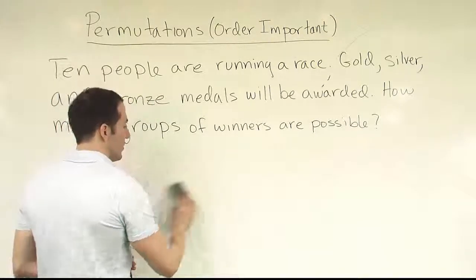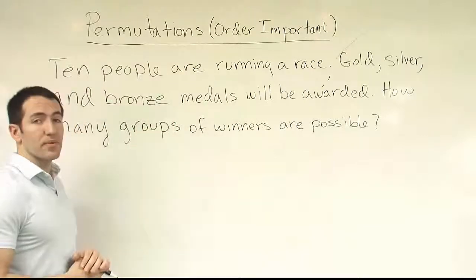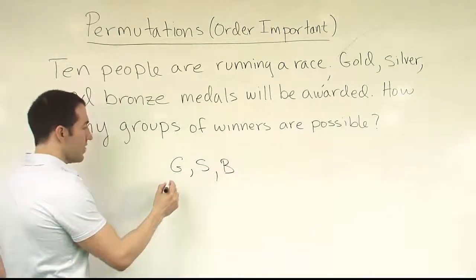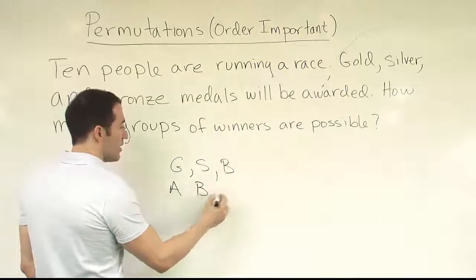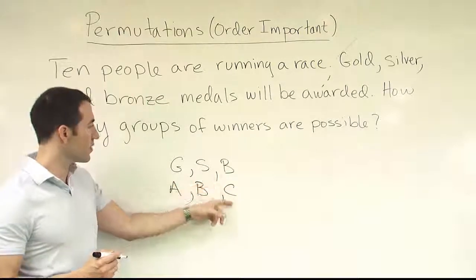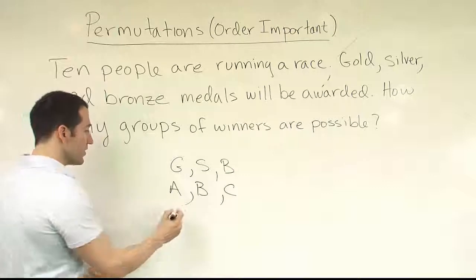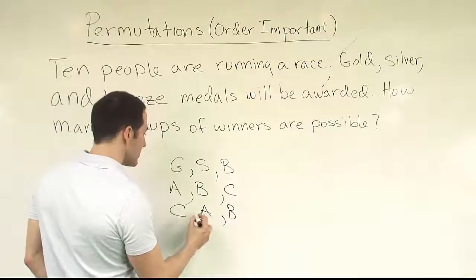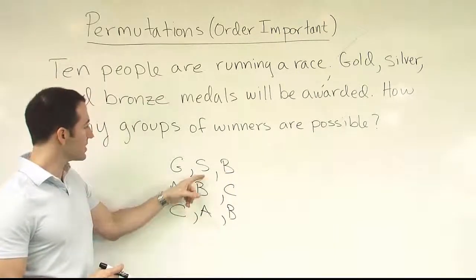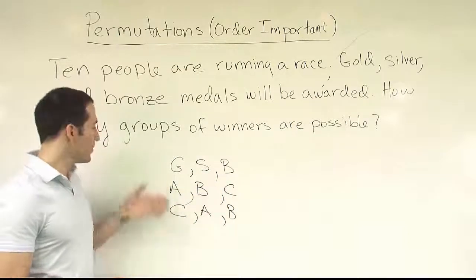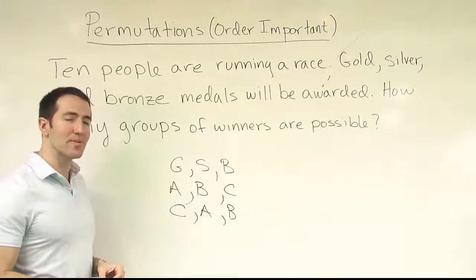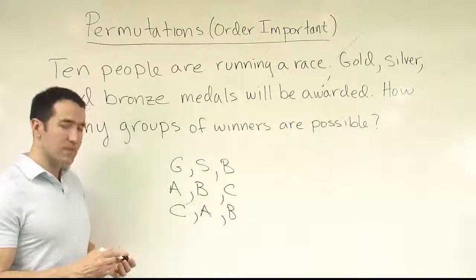Compare that to the race idea. If I'm giving away gold, silver, and bronze medals — say Angela, Bobby, and Carlos are running. If I put them in the order A, B, C, that means Angela got gold, Bobby got silver, and Carlos got bronze. If I switch the order to C, A, B, things have changed — Carlos gets the gold medal, Angela gets the silver, and Bobby gets the bronze.